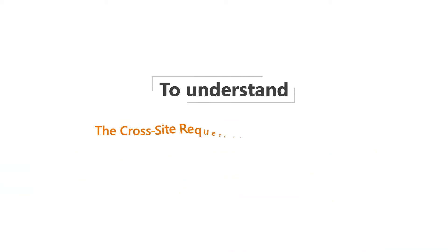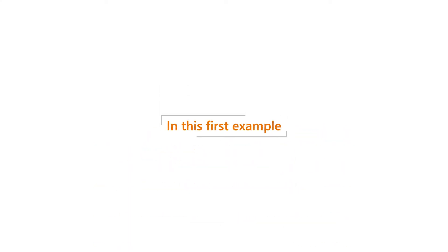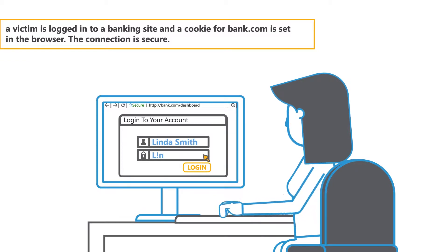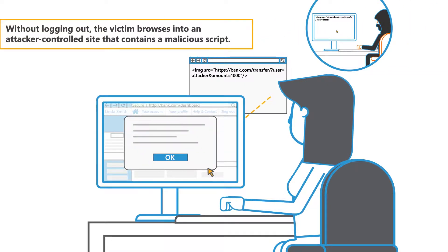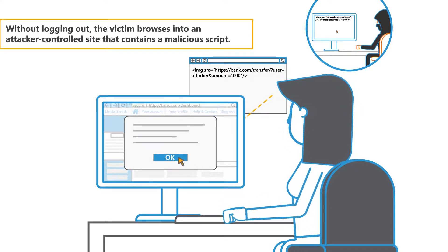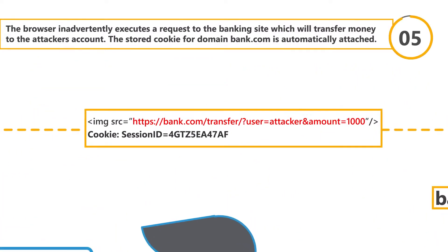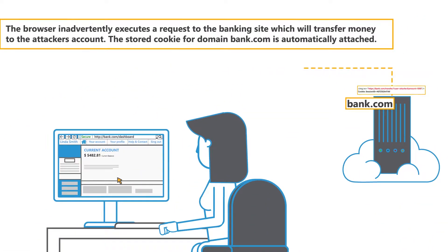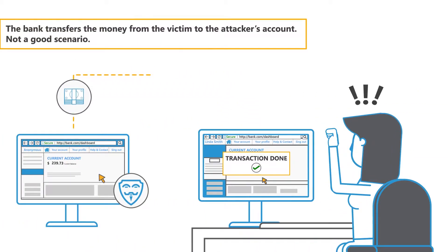To understand the cross-site request forgery vulnerability, let's look at some examples. In this first example, a victim is logged into a banking site and a cookie for bank.com is set in the browser. The connection is secure. Without logging out, the victim browses to an attacker-controlled site that contains a malicious script. The browser inadvertently executes a request to the banking site, which will transfer money to the attacker's account. The stored cookie for the domain bank.com is automatically attached, so the malicious request using the victim's current session is seen as valid by bank.com. The bank transfers the money from the victim to the attacker's account.